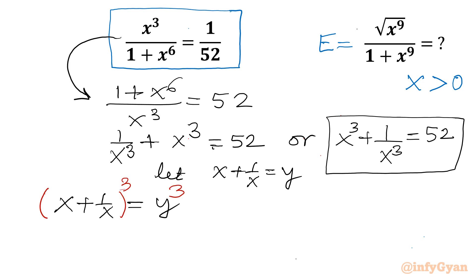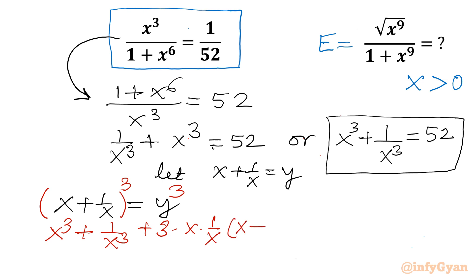Applying the formula (a + b)³ = a³ + b³ + 3ab(a + b): so x cubed plus 1 over x cubed plus 3 times x times 1 over x, times x plus 1 over x, equals y cubed.